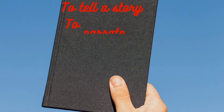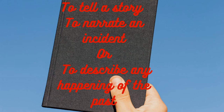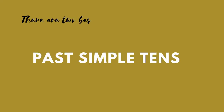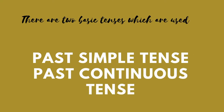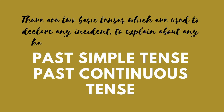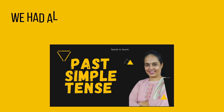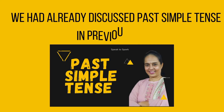To tell a story, to narrate an incident, or to describe any happening of the past, we use this tense. There are two basic tenses used to describe any incident of the past: past simple tense and past continuous tense. We have already discussed past simple tense in the previous video, but I am going to explain it again.